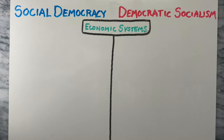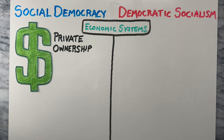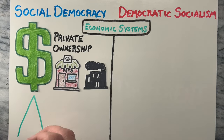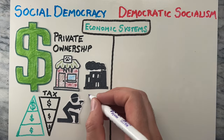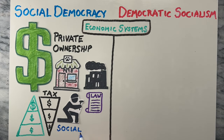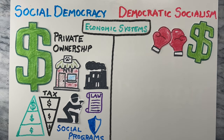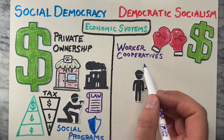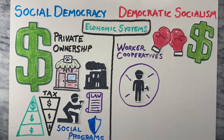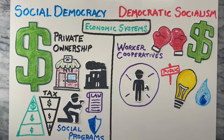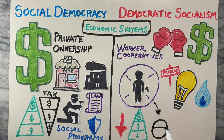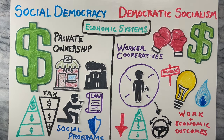Next, let's compare their economic systems. Social democracies maintain a predominantly capitalist economic system with private ownership of businesses and industries. However, they believe in regulating the economy through progressive taxation, labor laws, and social programs to promote economic equality and protect vulnerable citizens. Democratic socialists challenge the traditional capitalist economic system by advocating for worker-owned cooperatives and public ownership of key industries. They aim to reduce income inequality and give workers more control over their work and economic outcomes.